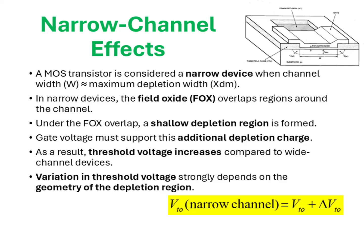An important point is that the extent of this threshold voltage shift is not a fixed quantity but depends on the exact shape and distribution of the depletion region. For example, if the depletion extends more triangularly near the FOX, the effective charge supported by the gate will be larger than in a purely rectangular depletion region. Thus, in narrow channel devices, design trade-offs become critical. Although narrow transistors help in scaling and packing density, they bring the penalty of increased threshold voltage, which can affect device performance, leakage control, and matching properties in analog circuits. This is why modern MOSFET design considers both short channel effects and narrow width effects when optimizing transistor characteristics in deep submicron technologies.